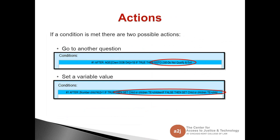If a condition is met, there are two possible actions. The first is telling it to go to another question — so if the client's date of birth converted to years is less than 18, I want A to J to kick them to the 'do not qualify and exit' question. I can also set a variable value. In the second example, if the number of children is greater than one, I want to set a new variable — child or children — to 'children.' If it's false, I want to set that same variable to 'child.'